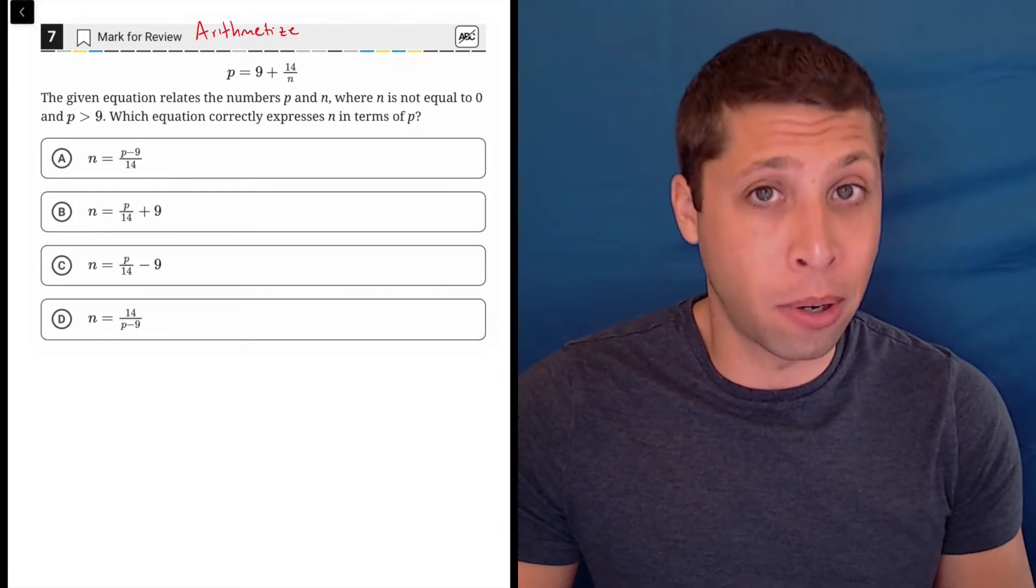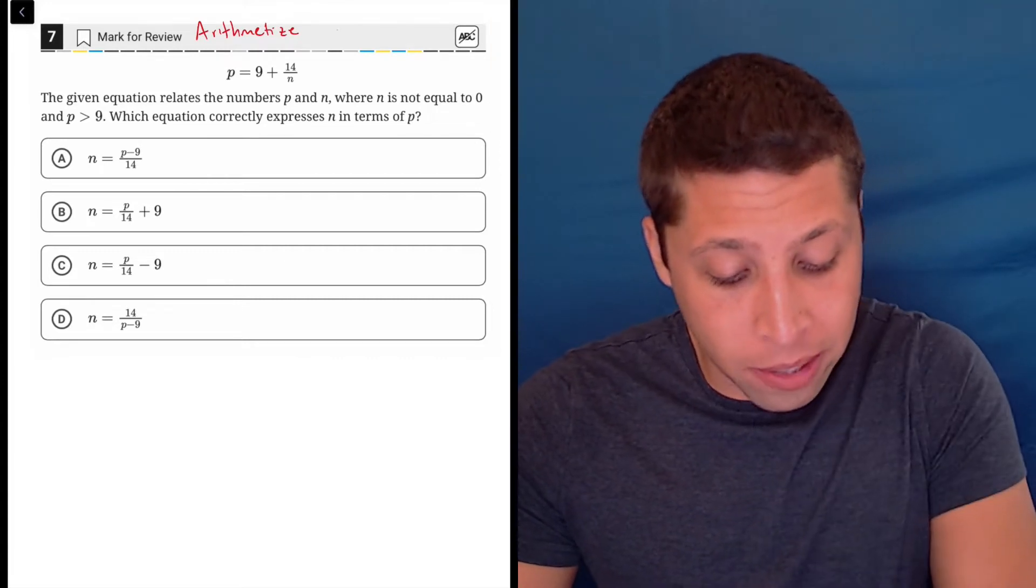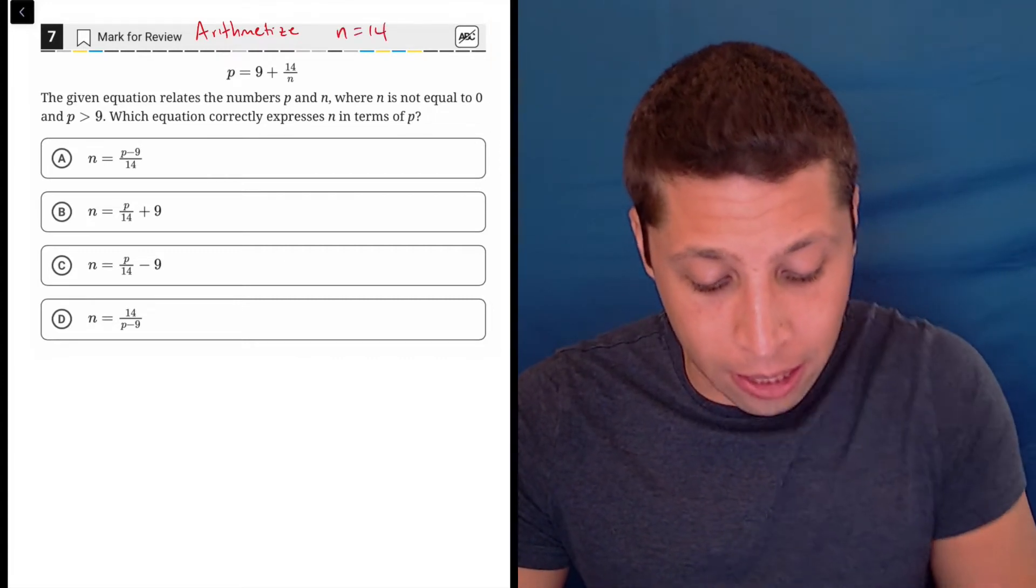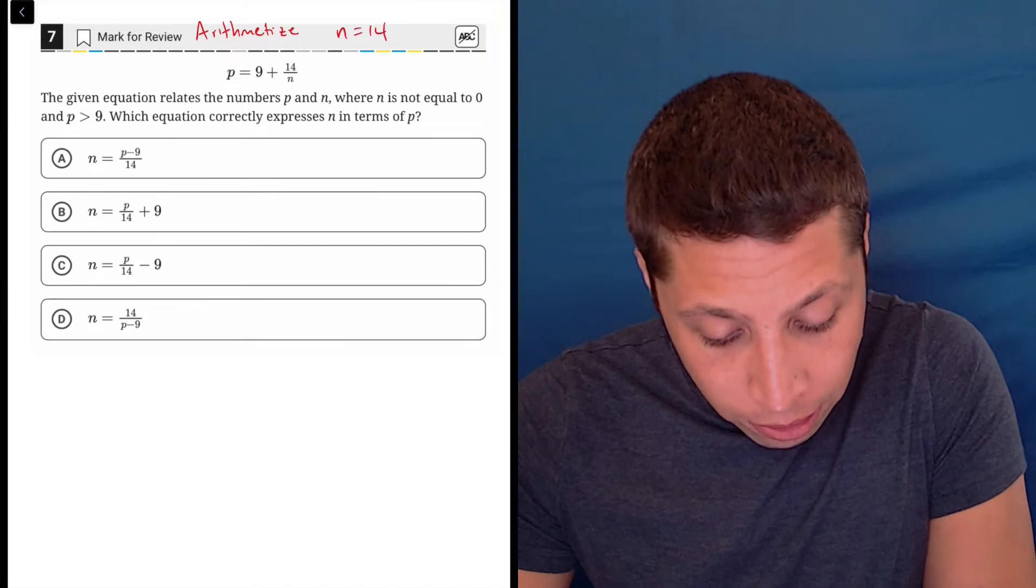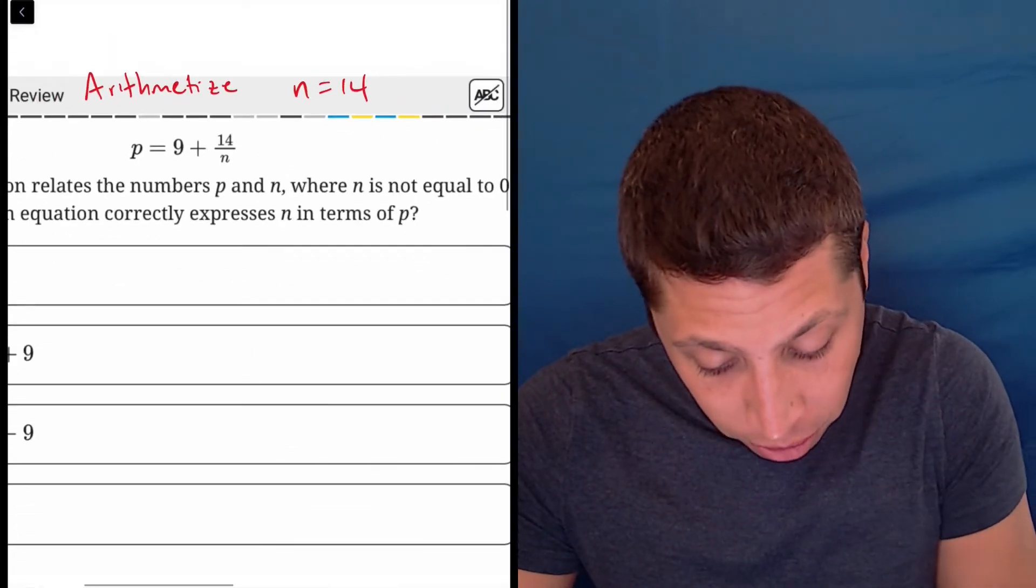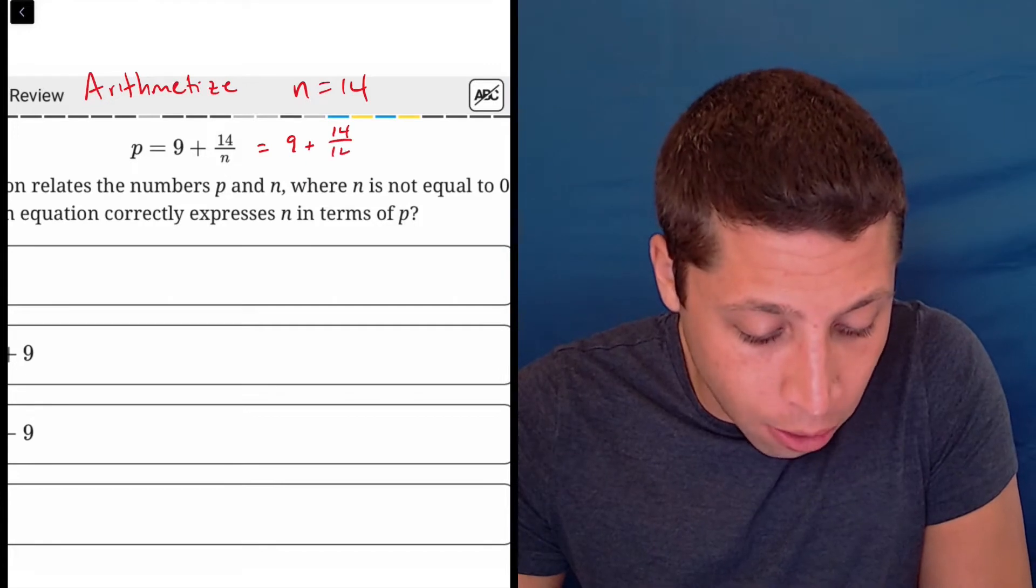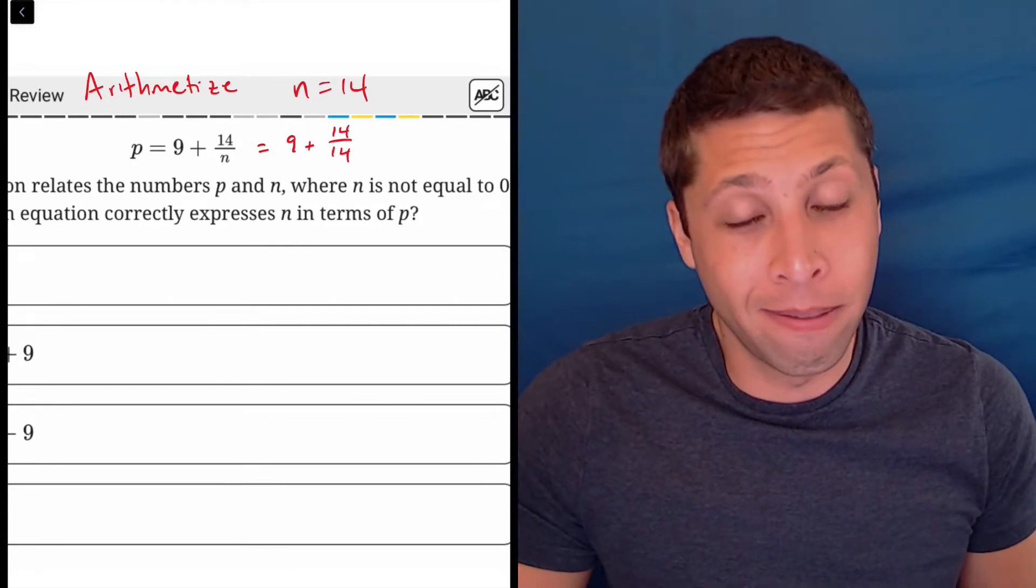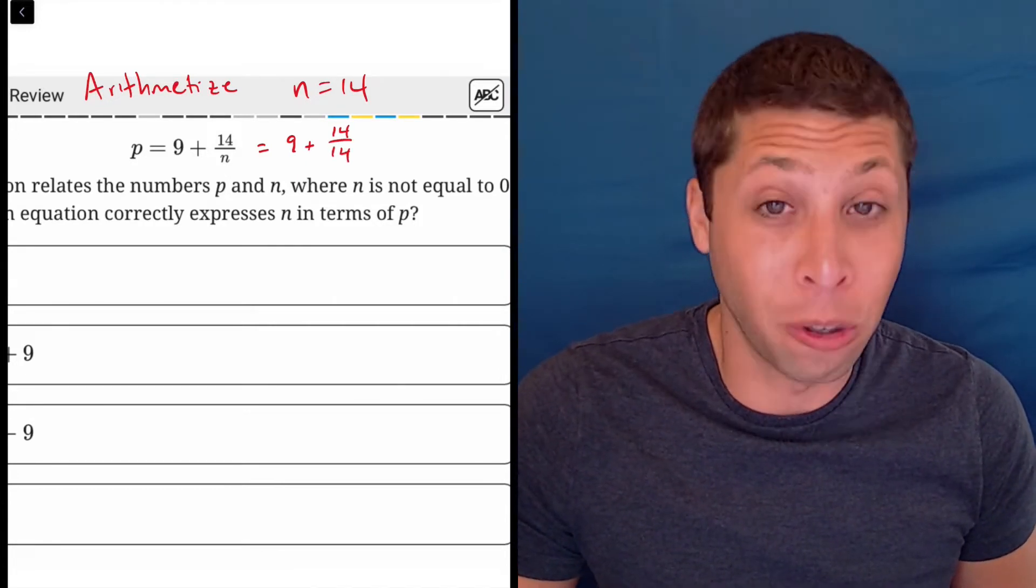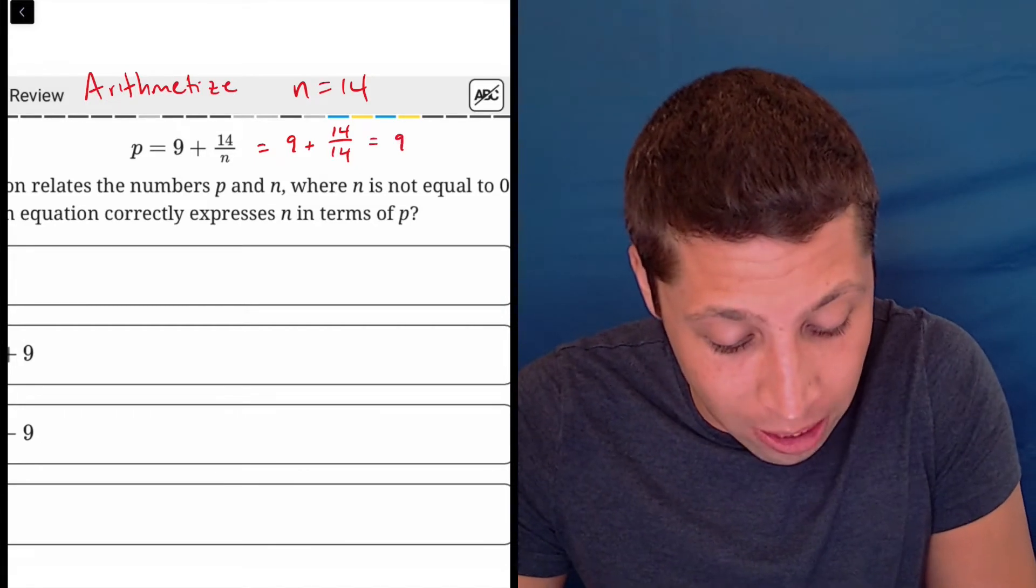The easiest number to pick here would be, let's pretend that n is 14. Because if I do that, notice what happens. This equation would become 9 plus 14 over 14, and 14 may seem like a weird number, but 14 over 14 is the very convenient 1.